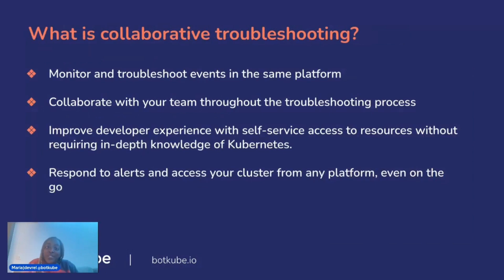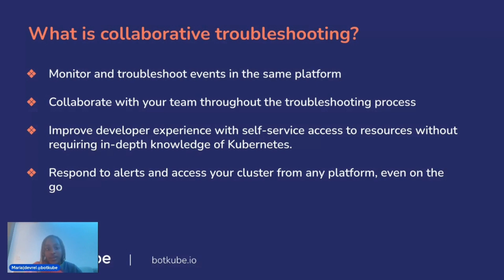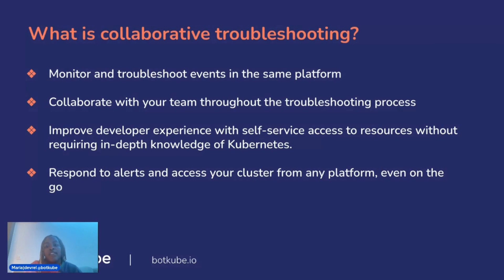So what is collaborative troubleshooting? At its core, it's the ability to monitor and troubleshoot events all in the same platform — using communication tools you're already using like Slack, Discord, Mattermost, and Teams — and being able to receive alerts and also act on them all in one place. You can improve your developer experience and give them self-service access without requiring them to understand Kubernetes.